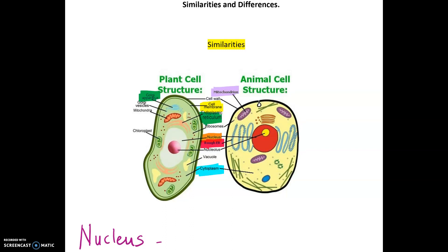So the first one there is the nucleus. Both cells have a nucleus and the job of the nucleus is where the genetic information is held or found. So the nucleus has genetic information.